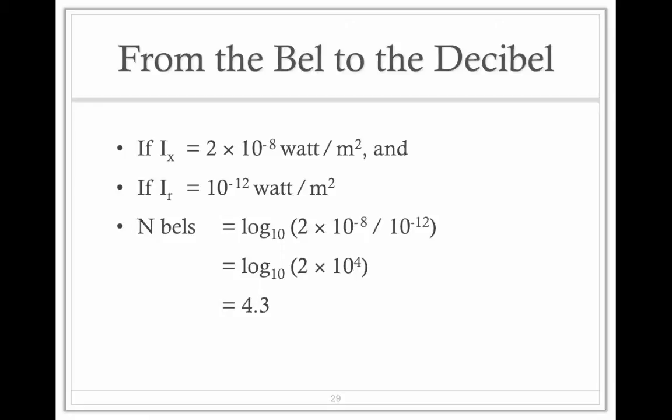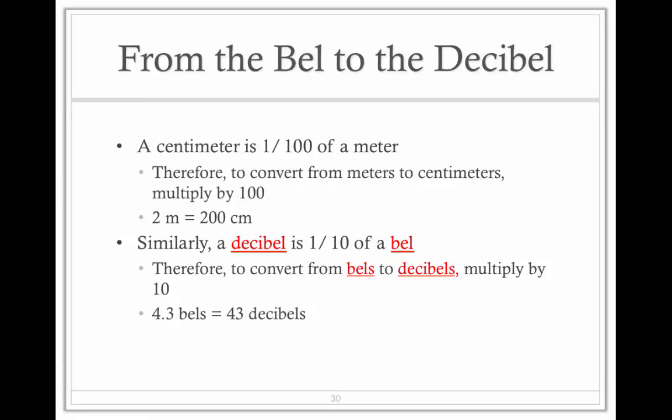Remember, our base is 10, a log is an exponent. So we can take bells, and if we want to find a decibel, which you might be familiar with that term, a decibel is simply one-tenth of a bell. So to convert from bells to decibels, all you have to do is multiply by 10. So 4.3 bells is the same as saying 43 decibels.